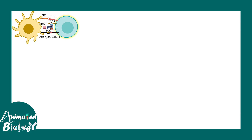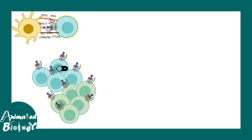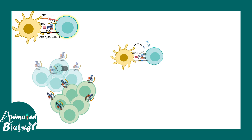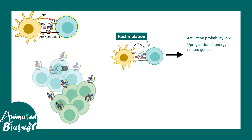The other key mechanism is clonal anergy. Due to auto-reactive T cell and APC interactions, many negative co-stimulatory signals such as CTLA-4 and PD-1 lead to anergy of these T cells. 'Clonal' means only a particular cell type among a subpopulation of T cells would be affected — specifically, only those T cells directed against a particular antigen. When these clones are further stimulated by a dendritic cell or antigen-presenting cell, the likelihood of activation is very low. Eventually, anergy-related genes are upregulated, making them more unresponsive to any stimulation. So they are not dead, but totally docile and inactive.